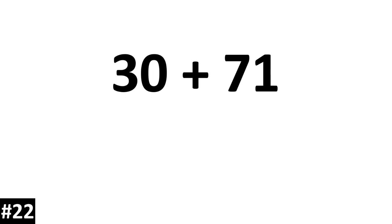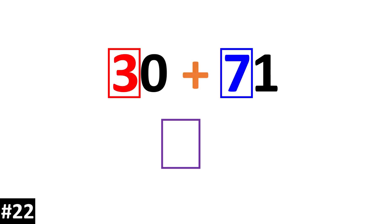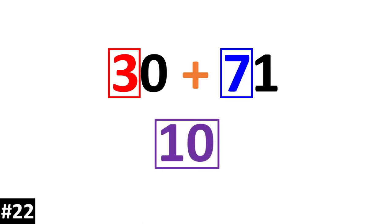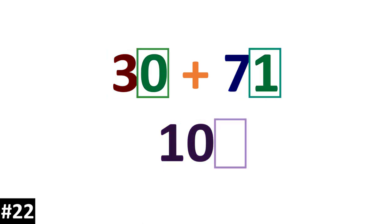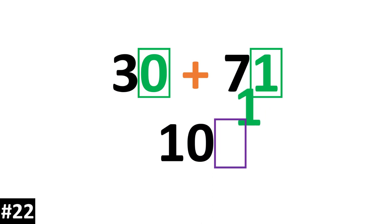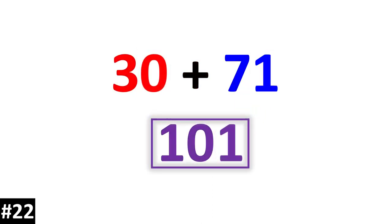30 plus 71. 3 tens plus 7 tens is 10 tens. Adding the ones: 1. The answer is 101.